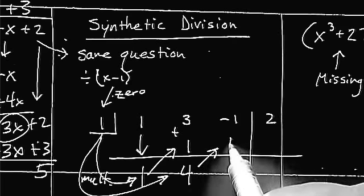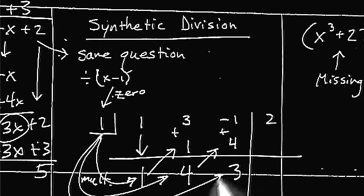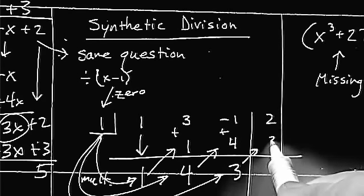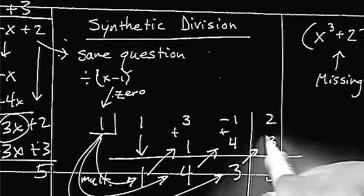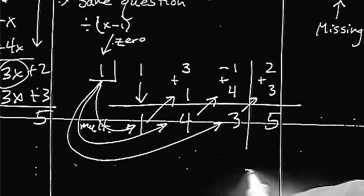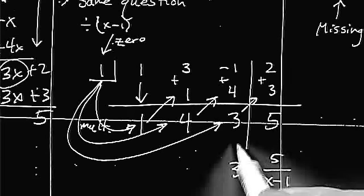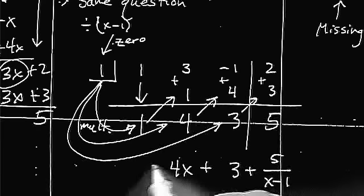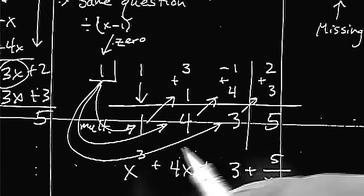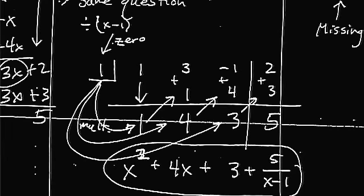Multiply. Add. Multiply. Add. Multiply. Add. We have the linear term, and we have the coefficient of the squared term. Exactly what we got before. It's a lot easier. A lot of kids like to use synthetic division. I want you to practice it. We'll practice it in class as well.